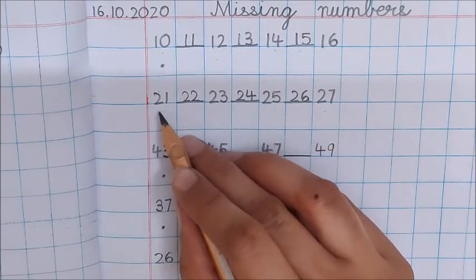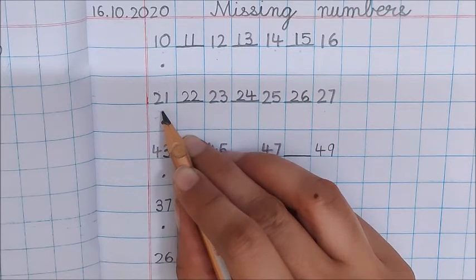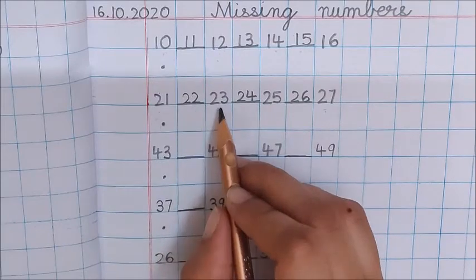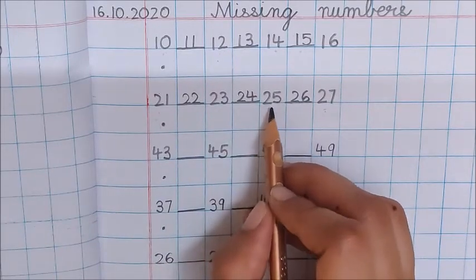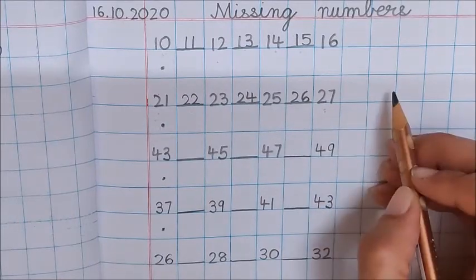Children, if you will start counting from beginning, then there will be less chances of making mistakes. Now, checking time. 21, 22, 23, 24, 25, 26, 27. It is also correct.